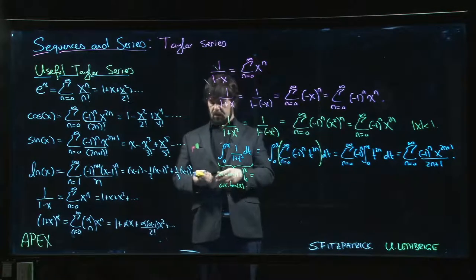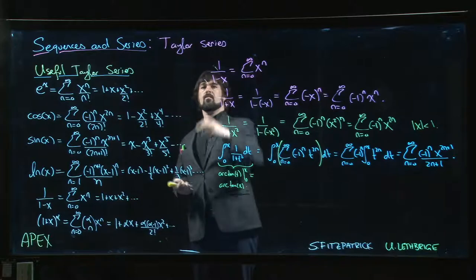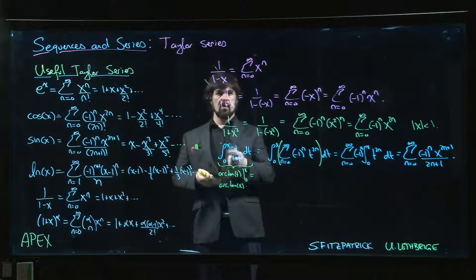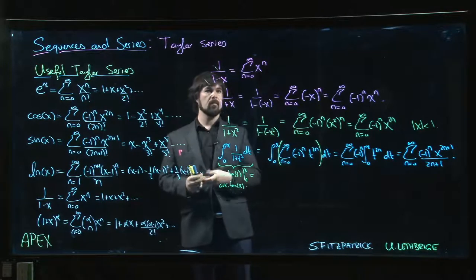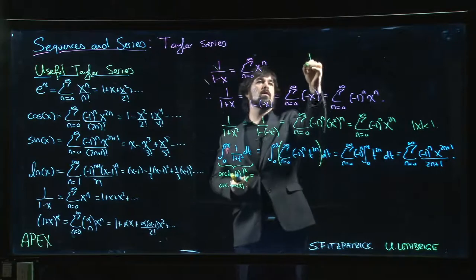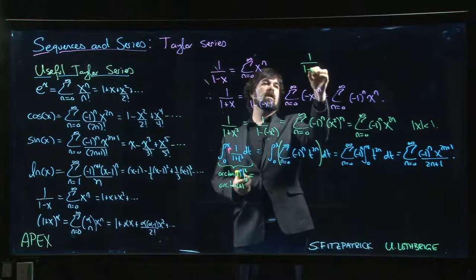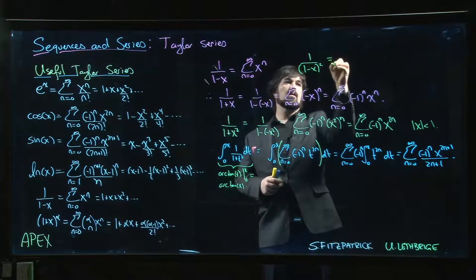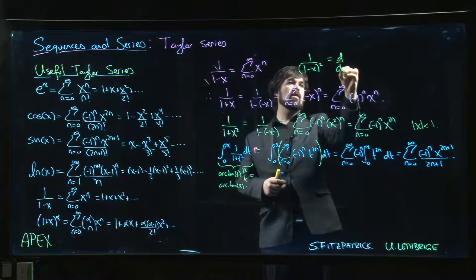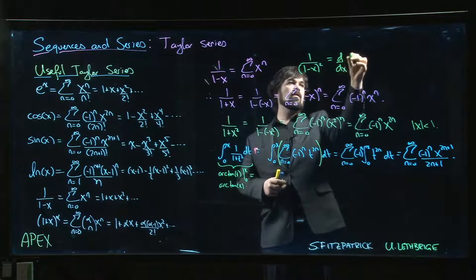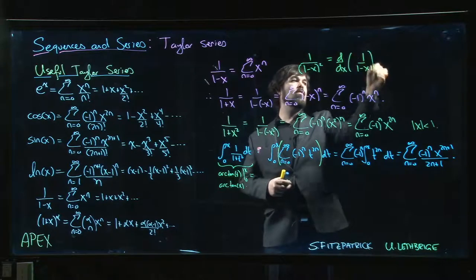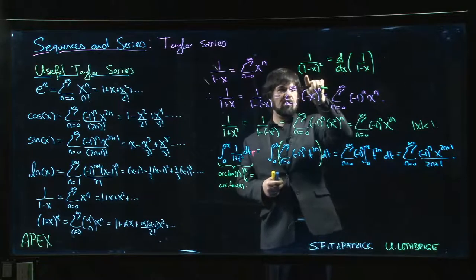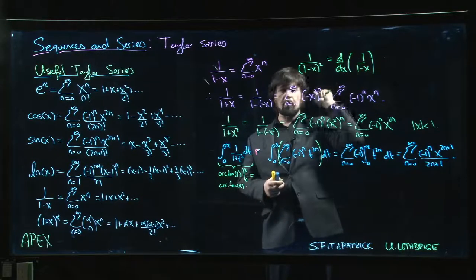Similarly, if we wanted to know things like, what's a power series for 1 over 1 minus x to the minus 2? What if I wanted 1 over 1 minus x all squared? Well, there's an observation we might make here, which is that's exactly what you get if you take the derivative of 1 over 1 minus x. Because that's 1 minus x to the minus 1. We take the derivative, we get minus 1 times 1 minus x to the minus 2 times another minus 1 from the chain rule.